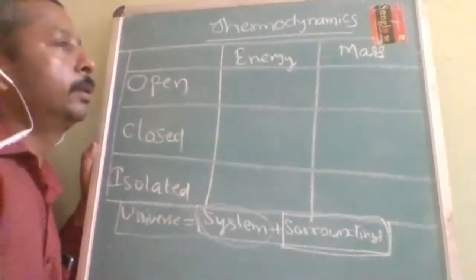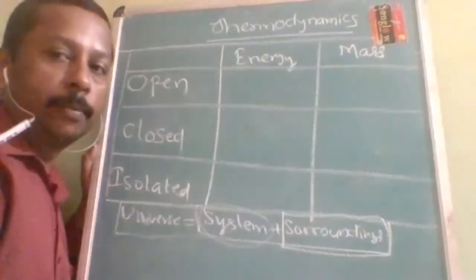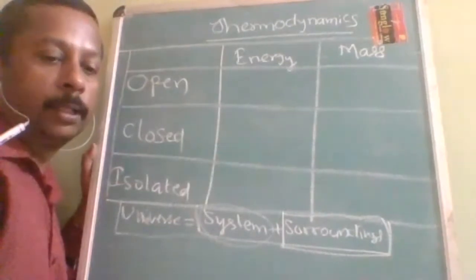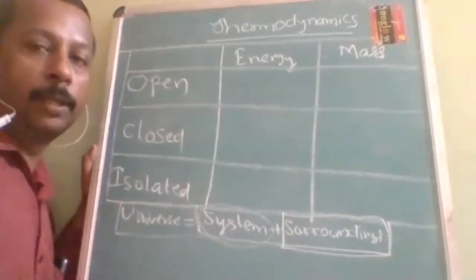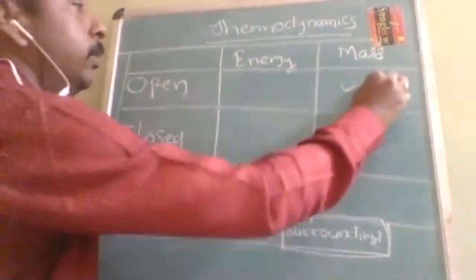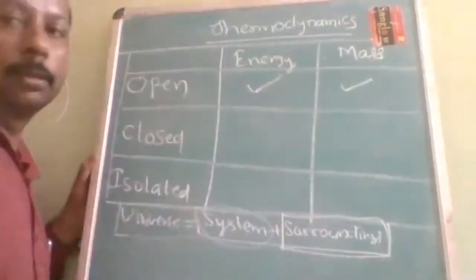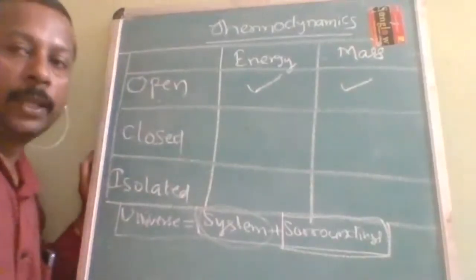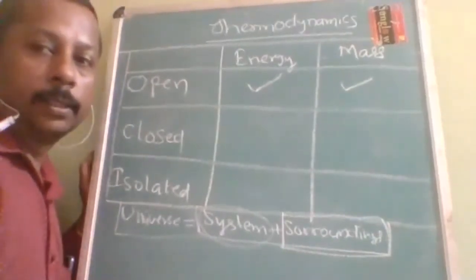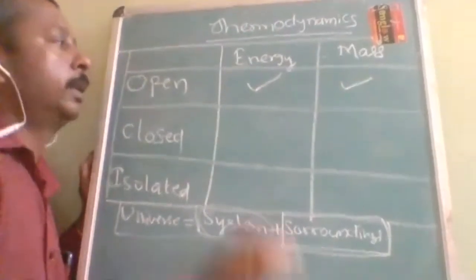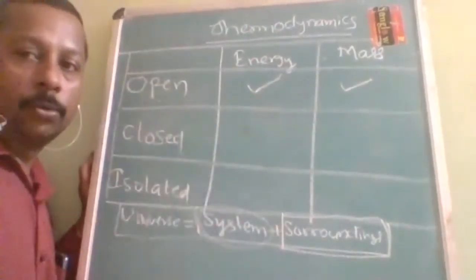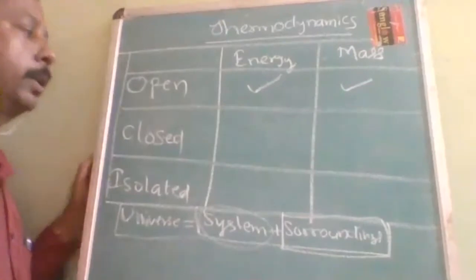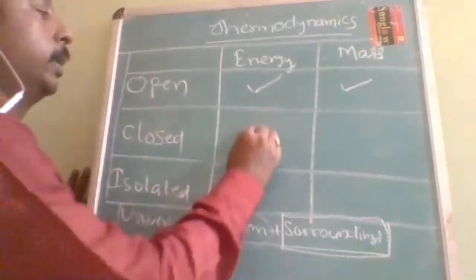The first is an open system. In an open system, mass can go out and mass can come into the system from the surroundings, and energy can also be exchanged. Both mass and energy are exchanged. This type of system which can exchange both energy as well as mass with the surrounding is called an open system.